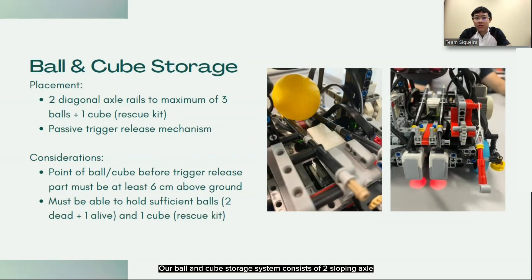Our ball and cube storage system consists of 2 sloping axle rails that allow the balls to slide along it and stop before the passive release trigger mechanism. The rails can hold a maximum of 3 balls and 1 cube.